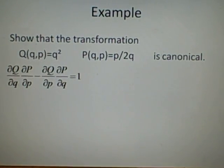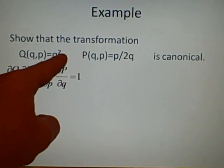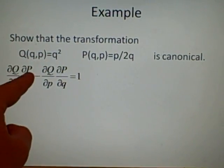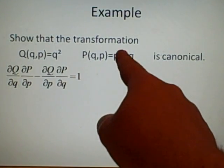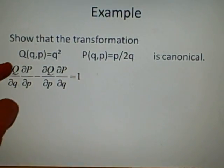So if we do this part first, big Q with respect to little q, so that'll go to 2q. This one here, dP/dp, will go to 1 over 2q. So 2q over 2q, which is 1.